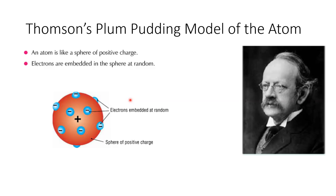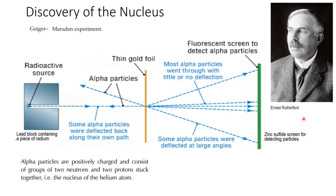Scientists then started to think about possible models for the atom. Thomson proposed that the atom had a sphere of positive charge, with electrons embedded in the sphere at random intervals. This became known as Thomson's plum pudding model of the atom — called a plum pudding because it resembles a plum pudding. It wasn't quite right, but it was a start, and like scientific ideas, they evolve as more and more evidence becomes available.